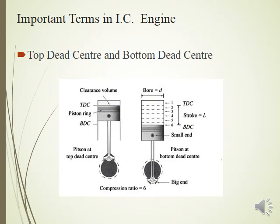The linear distance between TDC and BDC is known as stroke length. These centers are known as dead centers because they are stationary. The inner diameter of the cylinder is known as bore. The cross-sectional area of the cylinder multiplied by the stroke length gives us swept volume or stroke volume — representing the volume displaced as the piston travels from TDC to BDC or BDC to TDC during any stroke.